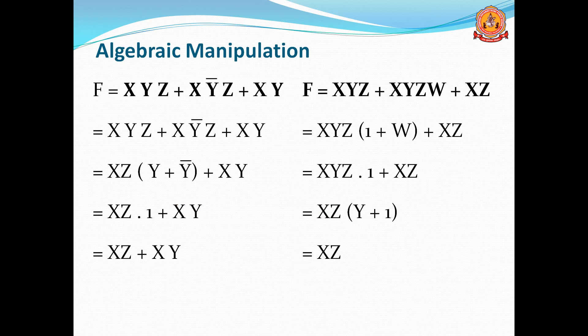One more example: F = xyz + xyzw + xz, with three terms. Looking at the first two terms, xyz is common in both. Taking xyz outside gives xyz(1 + w) + xz.